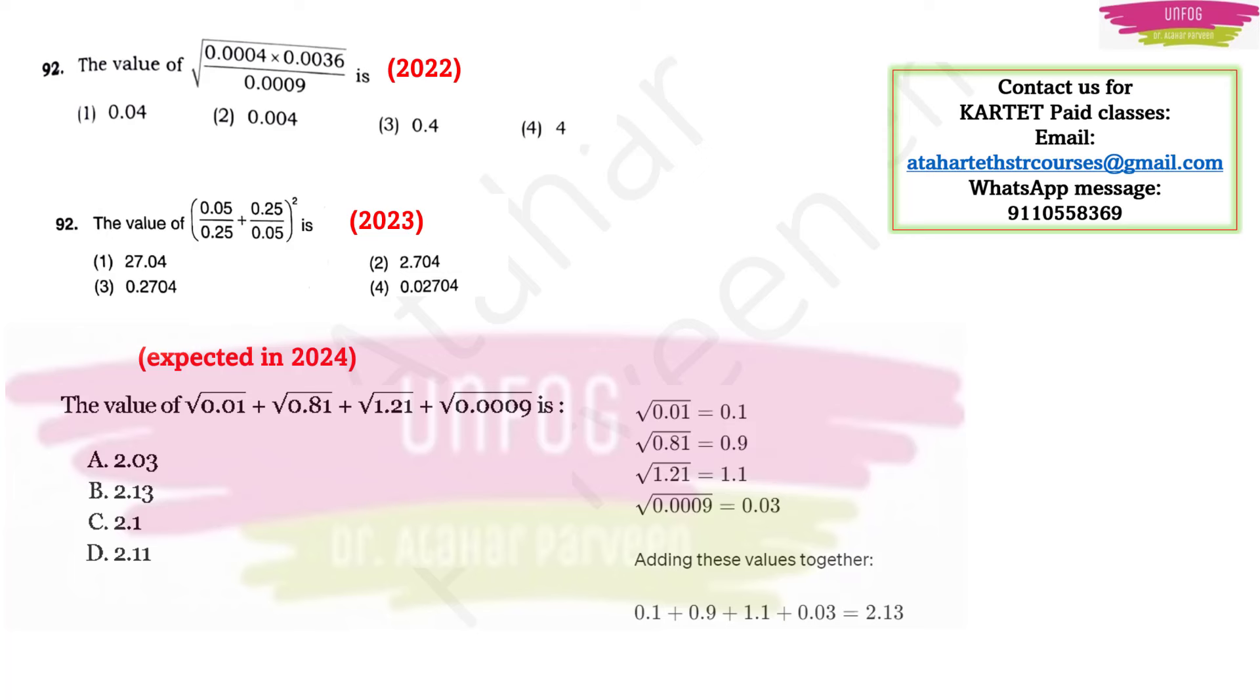Square root of 121 is 11, so here 1.21 will be 1.1. Similarly the square root of 9 is 3, but here there are 3 zeros after decimal points, so you will have 1 zero after decimal point. So the answer will be 0.03. Now as per the question just add up all these values and your answer will be 2.13.